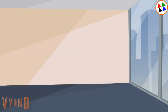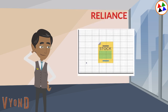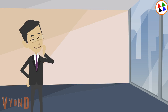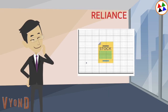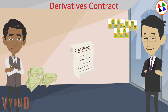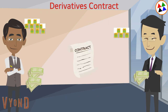For example, Suresh thinks that the shares of Reliance, whose price is currently rupees 900, will be priced at a fair price in a month. Rahul, who has some shares of Reliance, thinks that its value will be reduced. So the two people make an agreement accordingly.